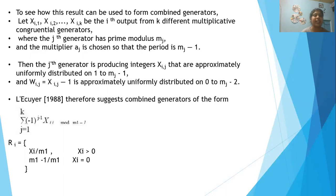We calculate W_i,j value as X_i,j minus 1, which is approximately uniformly distributed on 0 to m_j minus 2.